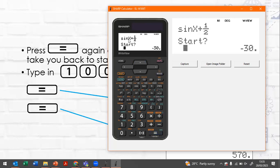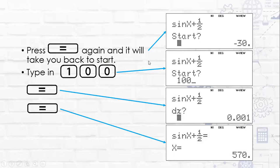We know a sine graph has multiple solutions so what we're going to do is type in 100 and see if we can find another solution. So press equals and equals again and we can see that it gives us a solution of 570. And that is because that is the next answer and that is converged on from 100.